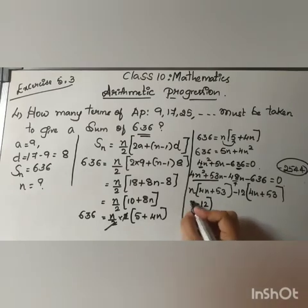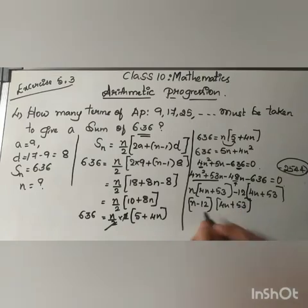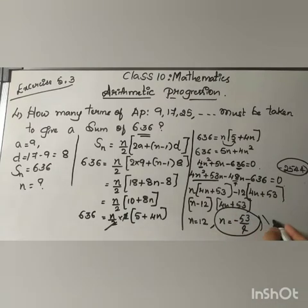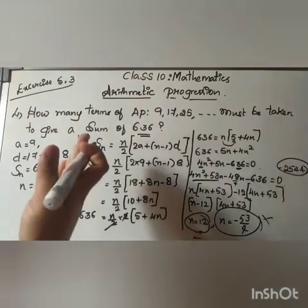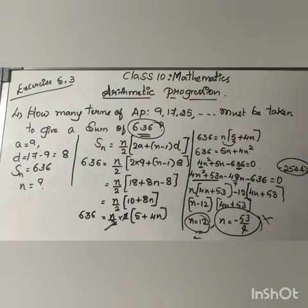So one is n equals 12 and another one is n equals minus 53 by 4. As you already know, n value won't be any negative, it will always be a natural number. So what is the value of n? How many terms will be there so that the sum you will get 636? Totally it will be 12 terms.